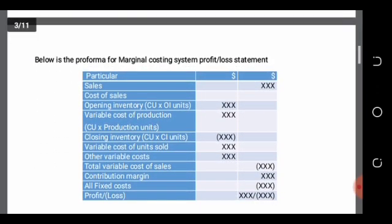The pro forma for the marginal costing system profit or loss statement — an income statement — will have sales, less cost of sales, and less other operating expenses. Cost of sales is formed of opening inventory plus production cost less closing inventory, which gives the variable cost of units sold. We then add other variable costs not related to production to form the total variable cost of sales.